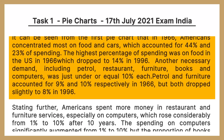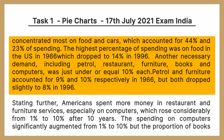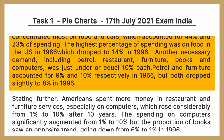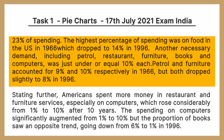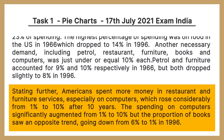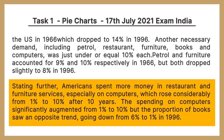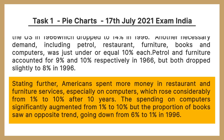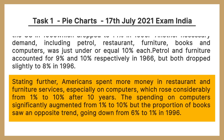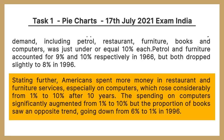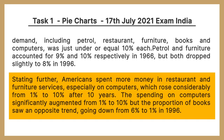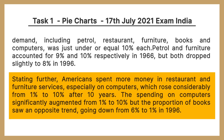Petrol and furniture accounted for nine percent and ten percent respectively in 1966, but both dropped slightly to eight percent in 1996. Americans spent more money in restaurants, and especially on computers, which rose from one percent to ten percent after 30 years. The spending on computers significantly increased from one percent to ten percent, but the proportion of books saw an opposite trend, going down from six percent to one percent in 1996.